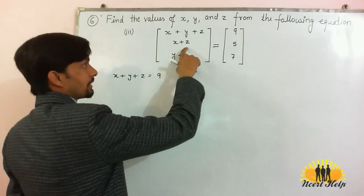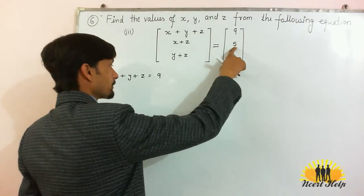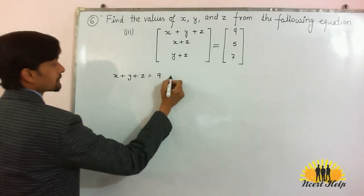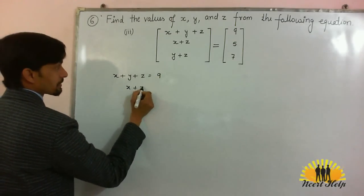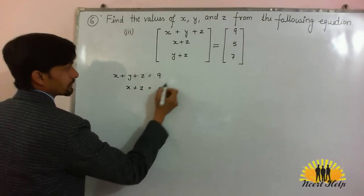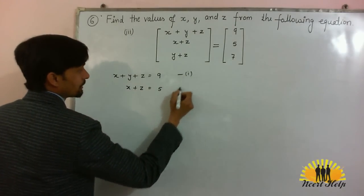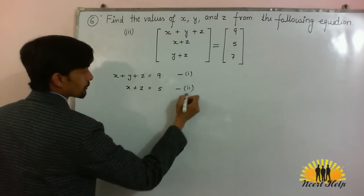Here x plus z, and in this matrix it is 5. So it means x plus z is equal to 5. This is equation number 1 and this is equation number 2.